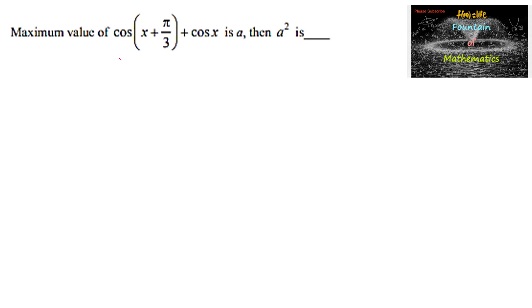Given maximum value of cos(x + π/3) + cos(x) is a, then a² is... Let us consider the function f(x) = cos(x + π/3) + cos(x).